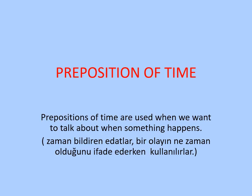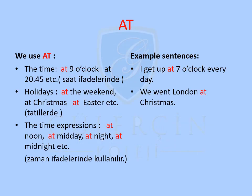Let's go on to preposition of time. Prepositions of time are used when we want to talk about when something happens. Let's start with 'at.' We use 'at' with specific times: at 9 o'clock, at 20:45, etc. We use 'at' with holidays: at the weekend, at Christmas, at Easter, etc. We also use 'at' with time expressions such as at noon, at midday, at night, at midnight, etc.